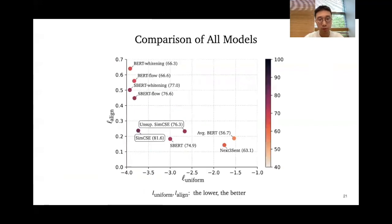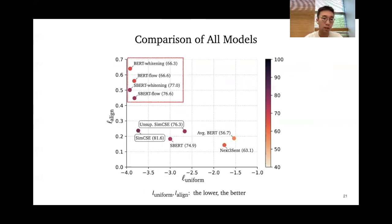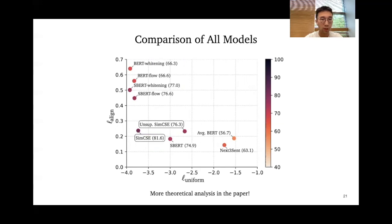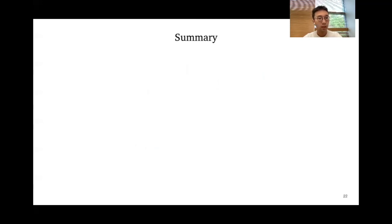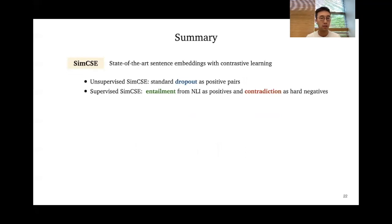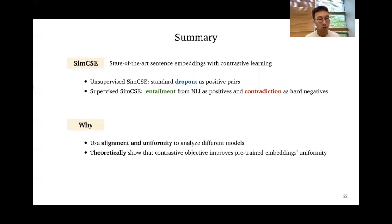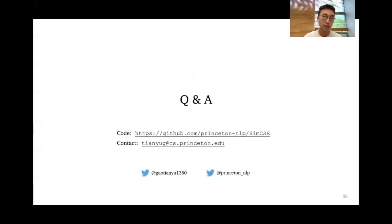Applying the alignment-uniformity tool to all models: average BERT embeddings, though good at alignment, have poor uniformity. Post-processing methods make embeddings more uniform but suffer a drop in alignment. Our SimCSE models enjoy both good alignment and uniformity. We also have more theoretical analysis in the paper. To conclude, we propose SimCSE for state-of-the-art sentence embeddings with contrastive learning. Our unsupervised model uses standard dropout as positive pairs, and our supervised model further uses entailment and contradiction pairs from NLI datasets. We also provide theoretical and empirical analysis using alignment and uniformity tools to explain why the contrastive objective works.